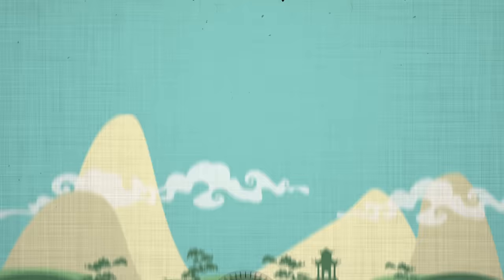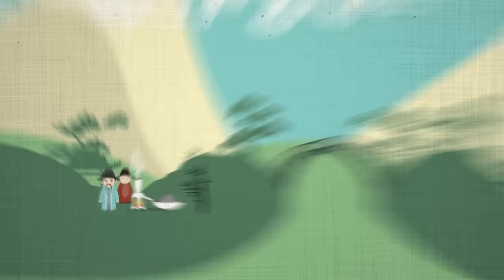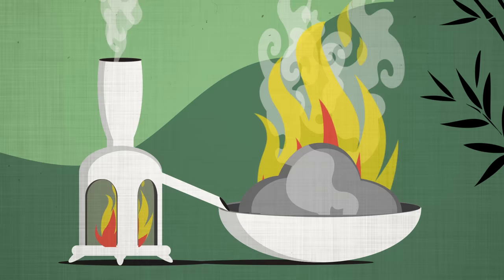Our story begins back in ancient China in the mid-9th century, where early Chinese alchemists were trying to create a potion for immortality. Instead, what they created was a flammable powder that burned down many of their homes.